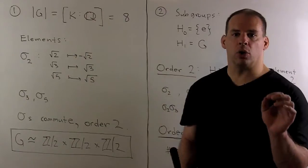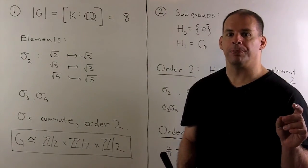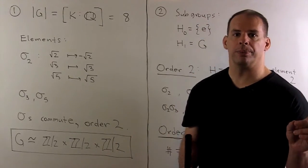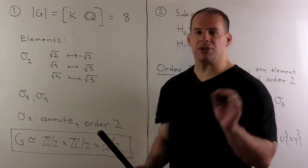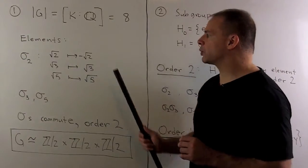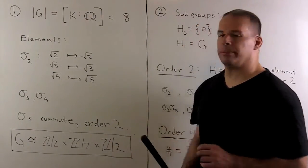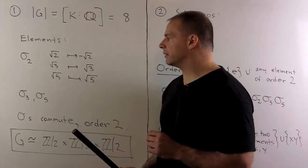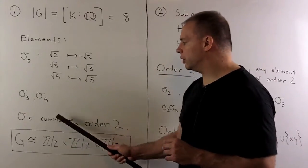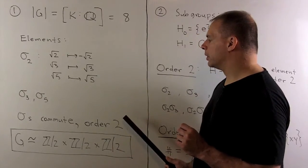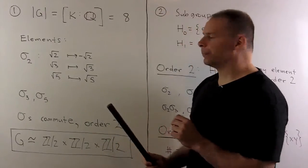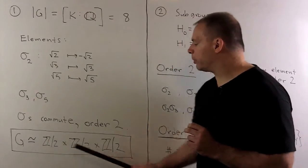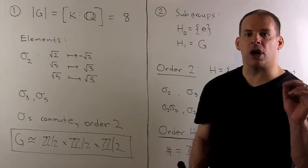Because the Galois group permutes the roots of the irreducible factors, √2 must go to either √2 or -√2. We define σ₂ as the automorphism carrying √2 to -√2 and fixing √3 and √5. Likewise, we define automorphisms σ₃ and σ₅. A quick check shows the sigmas commute and have order 2. Taking all possible products gives 7 elements of order 2, so our group is isomorphic to (Z/2Z)³.